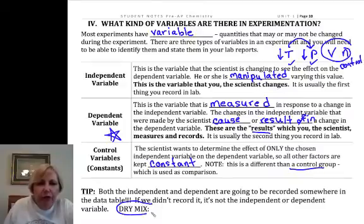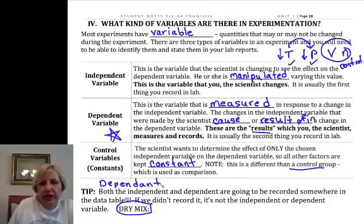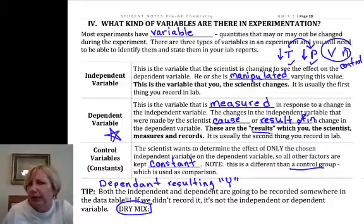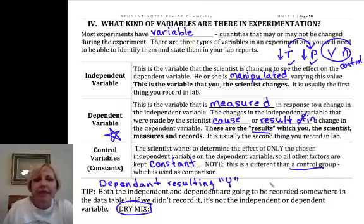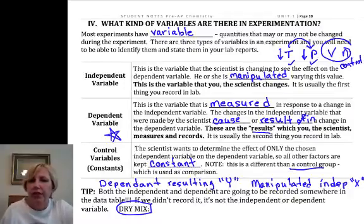Now, a way to help remember these is to remember the phrase DRY MIX. DRY MIX stands for dependent variable, the dependent variable is the resulting variable, and it's almost always on the y-axis. One exception would be we typically put time on the x-axis, whether it's the independent or dependent. But that's how it's done. And then the manipulated or manipulating variable is your independent, and we graph that on the x-axis.